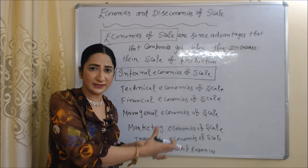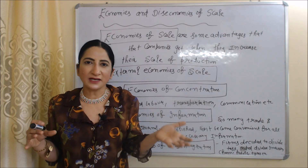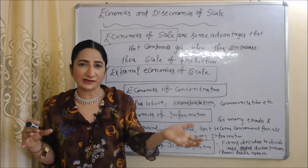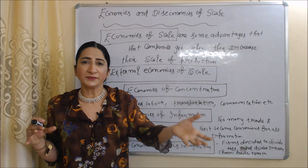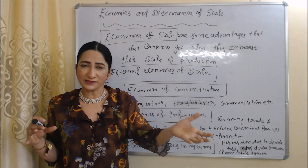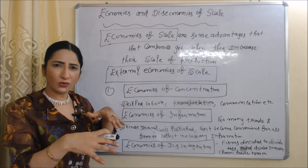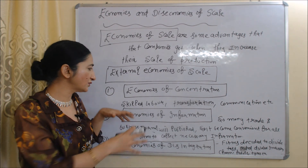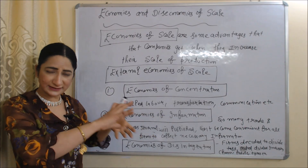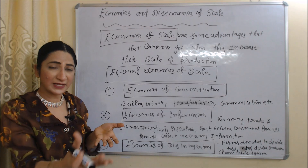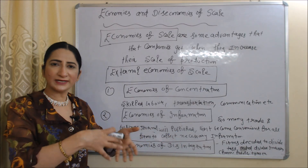Now we will see external economies of scale. External economies of scale means business-enhancing factors found outside the company — advantages that each firm gets when the whole industry is expanding. The first external economy of scale is economies of concentration: when the whole industry is expanding, each firm can get the advantage of skilled labor, transportation, communication, etc. Next is economies of information: when the whole industry is expanding, many trade and business journals will be published, making it convenient for firms to collect all necessary information.